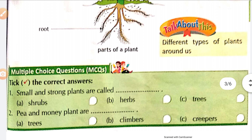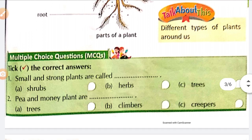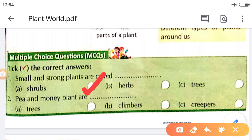Next, multiple choice questions. Take the correct answers. One: small and strong plants are called — A. Shrubs, B. Herbs, C. Trees. The answer is shrubs. Second: Pea and Money Plant are — A. Trees, B. Climbers, C. Creepers. The answer is climbers.